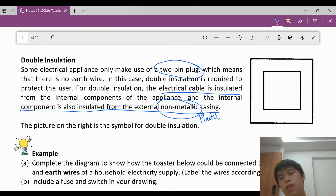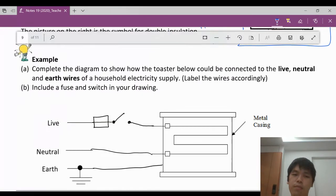One example, your fan that you use is usually made of plastic covering. The symbol for double insulation is here. It's just two squares inside each other.